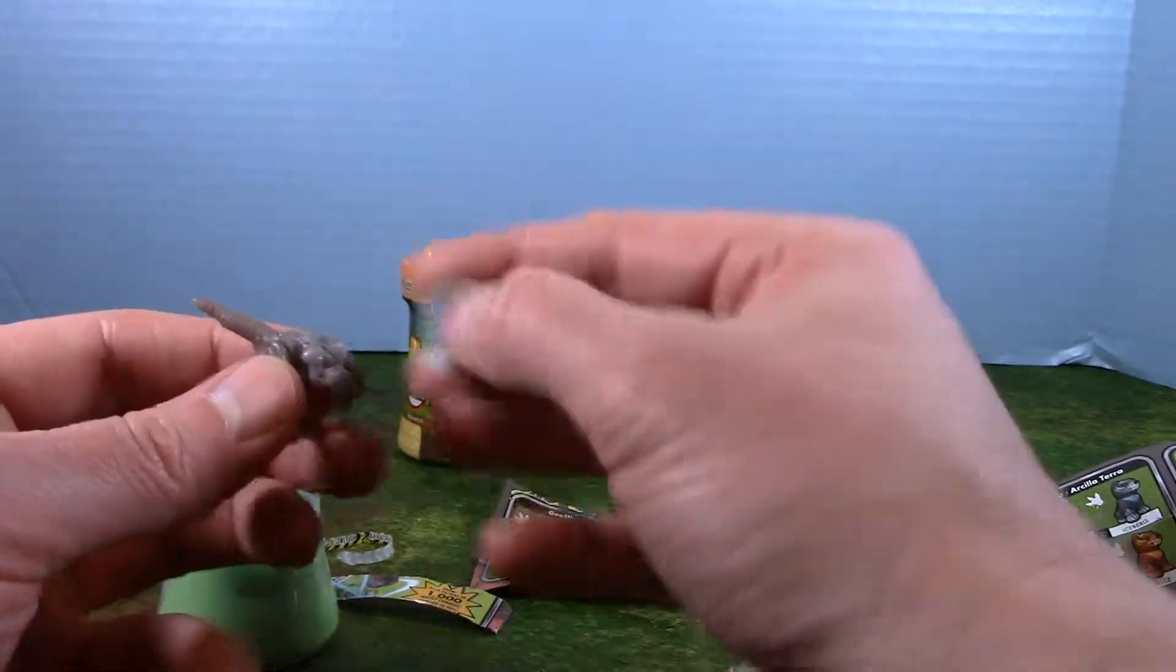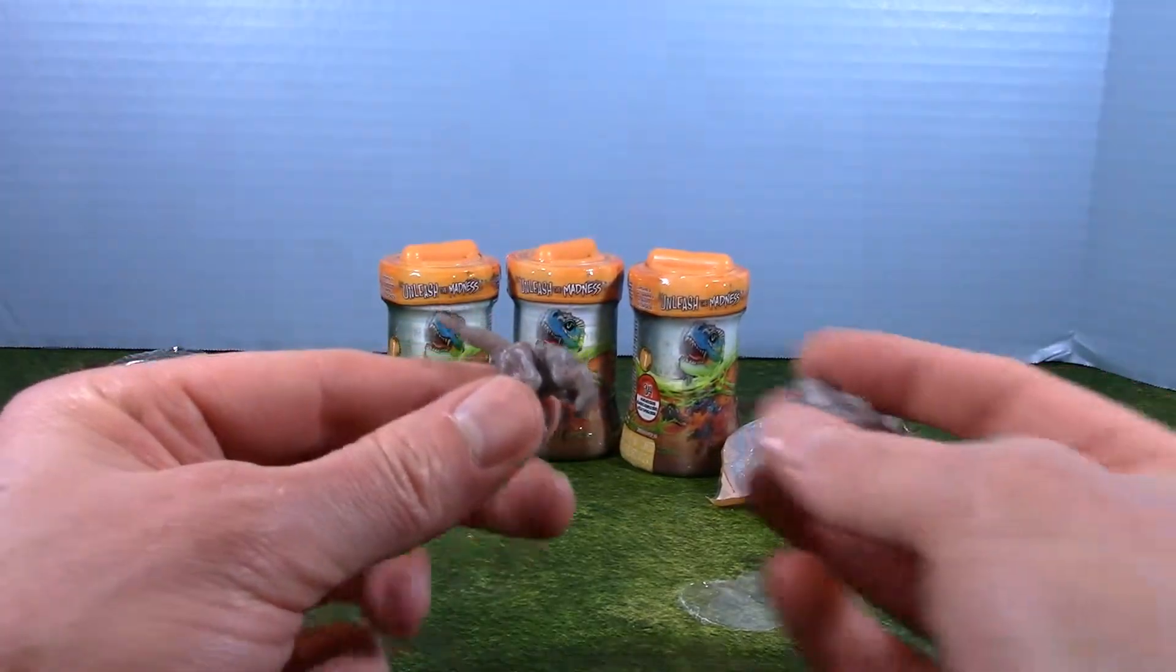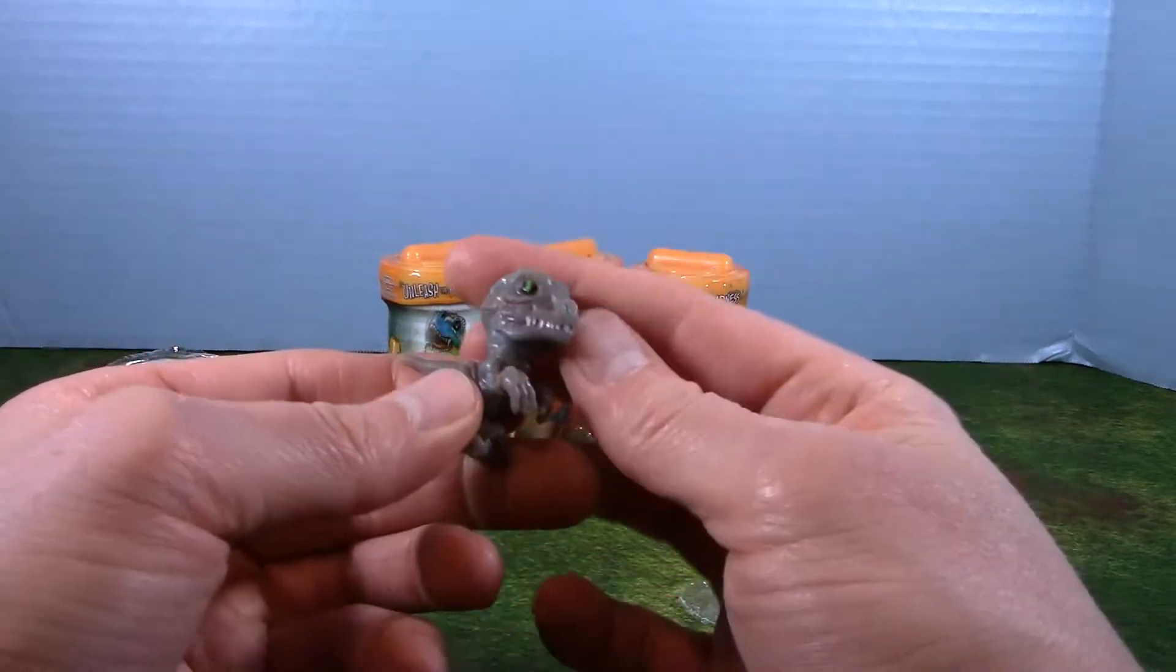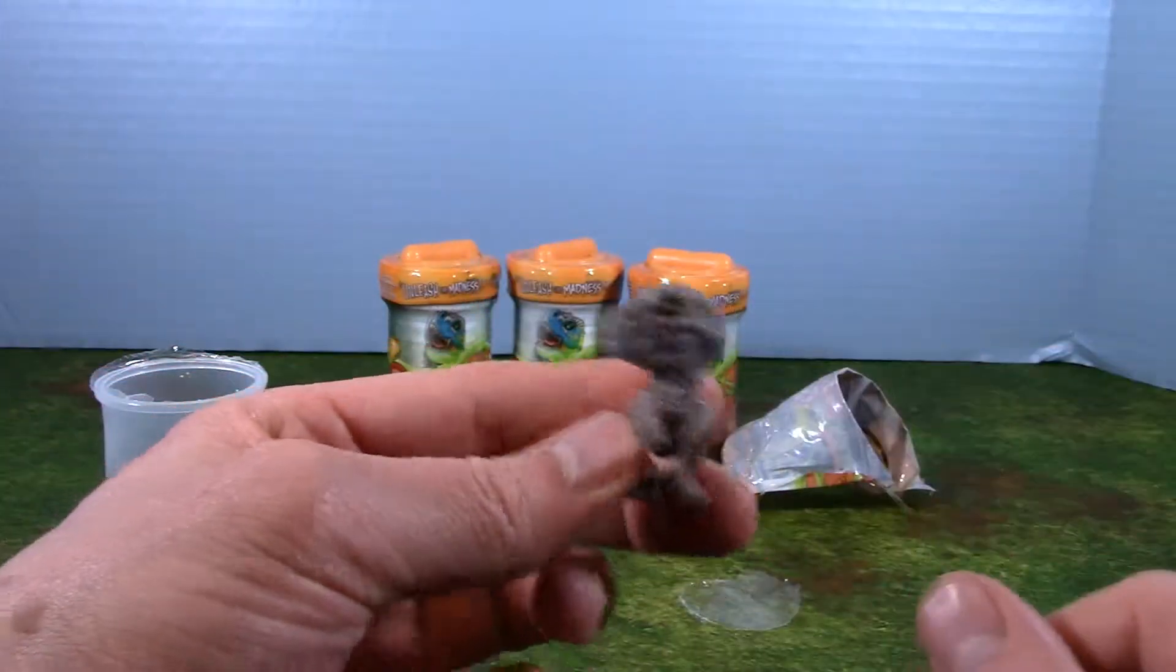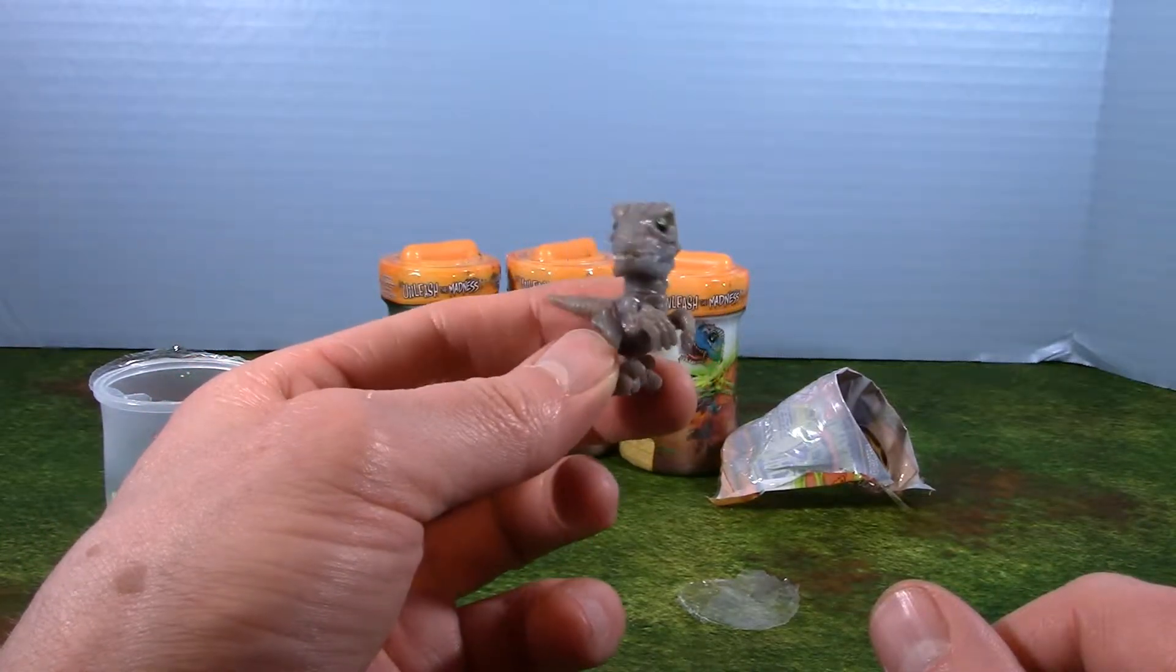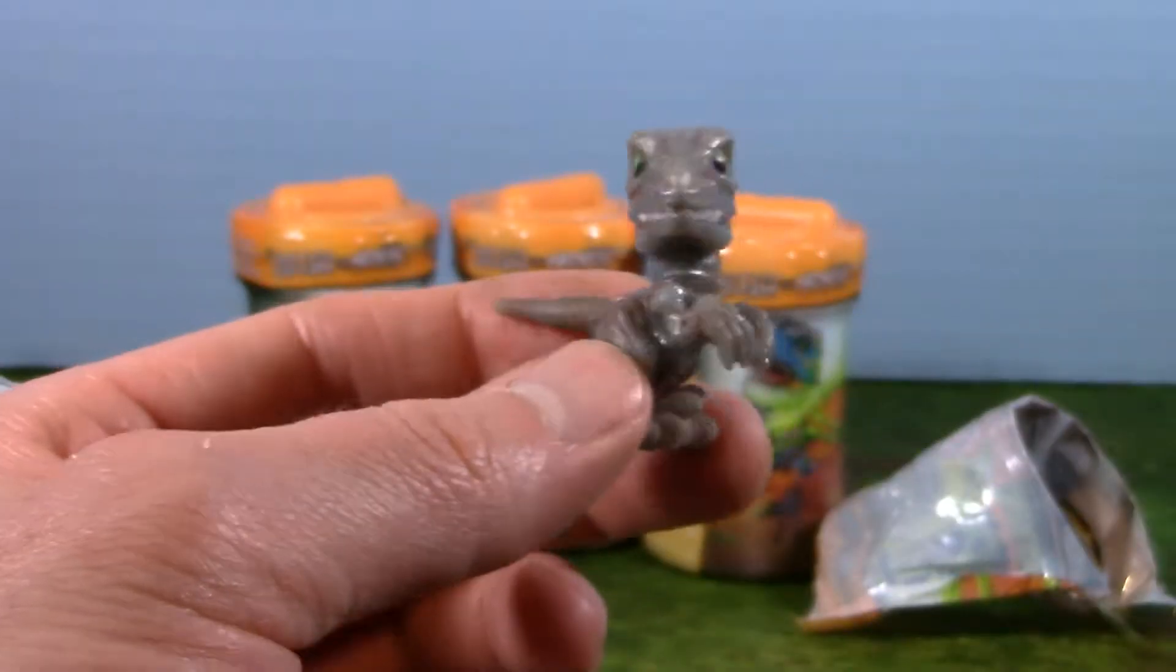Here's our dinosaur. Check this out. Looks like a little velociraptor. See the head comes off, and you can pop it right on and turn the head. Check that out. That's really neat. That's a cool looking little guy. He's kind of got green glowing eyes. Looks like a little miniature velociraptor.